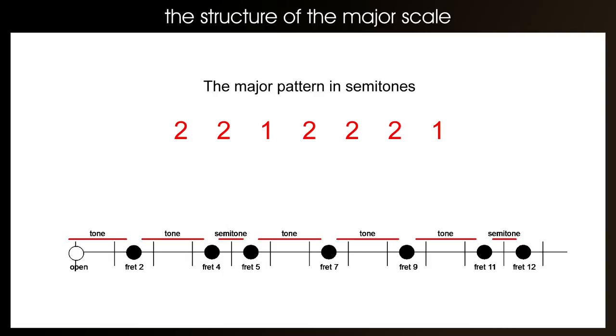We can demonstrate this on the guitar using either the bottom E string or the top E string. I'll be demonstrating this on the bottom E string. The first note I'll play is the bottom E string. Then 2 frets up, which is the 2nd fret. 2 frets up again, which is the 4th fret. 1 fret up, which is the 5th fret. 2 frets up, which is the 7th fret. 2 frets up again, which is the 9th fret. 2 frets up again, which is the 11th fret. And 1 fret up, which is the 12th fret.